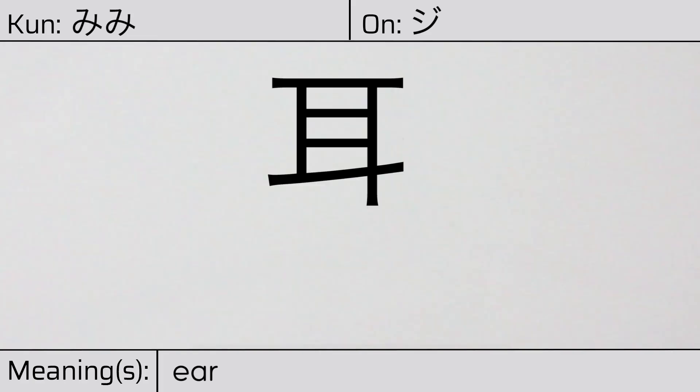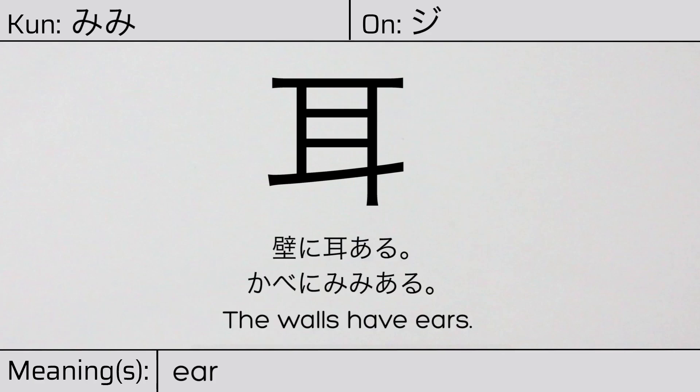Our example sentence is: 壁に耳がある — The walls have ears.